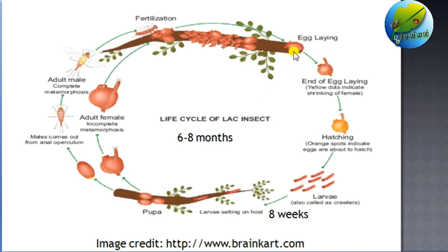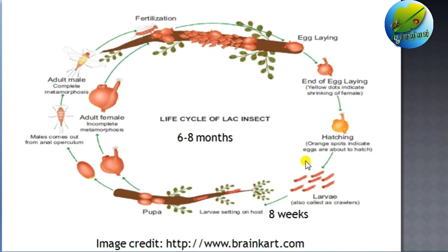Females start to lay eggs inside the cell itself. As soon as egg laying is completed, the female cells start to shrink, which will be visible as yellow dots — this indicates that egg laying is over. Later on, when the egg laying is over and hatching starts, the cells turning into orange spots indicates that hatching has begun.